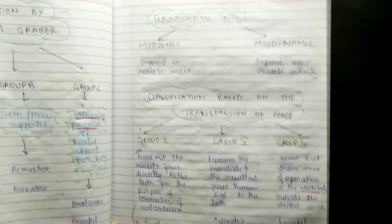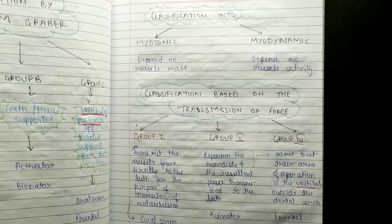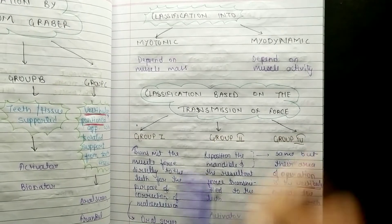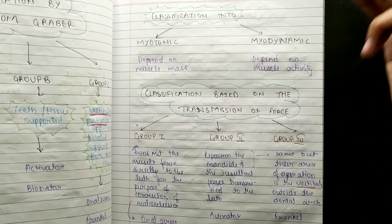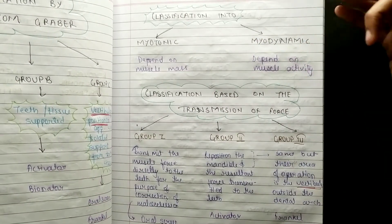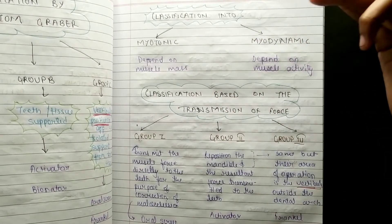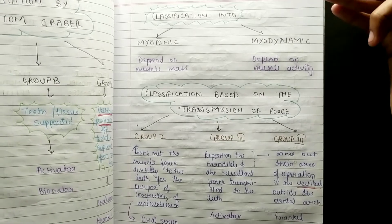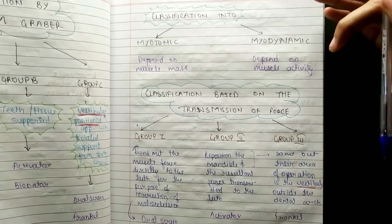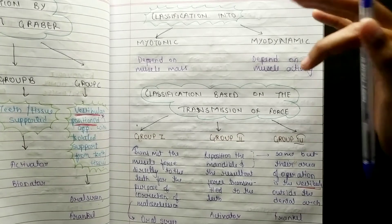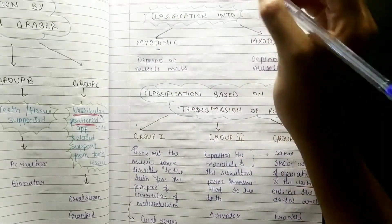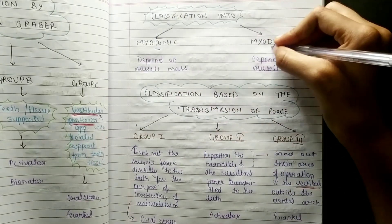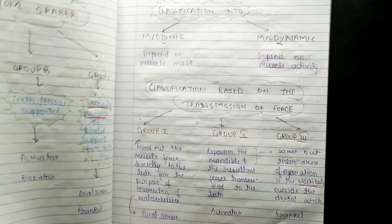Now the classification of myotonic and myodynamic appliances. Myotonic appliances depend on muscle mass, and myodynamic appliances depend on muscle activity — tonic versus dynamic.